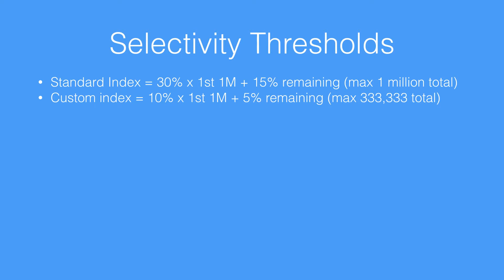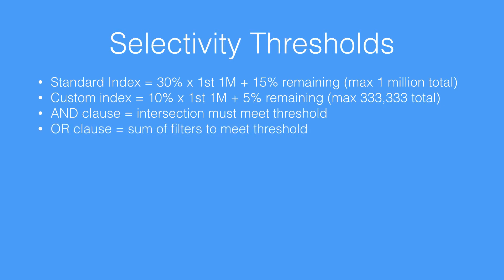If you're using an AND clause within the two filters that you're working with, the intersection you use must also meet the threshold. And if you're using an OR clause, some of the filters must meet the threshold. So if you have two filters and you're working with an OR clause, the two filters together — the amount of records they retrieve — must add up to be less than one of those thresholds. It's normally the custom index threshold, but if you're using two standard indexes, it'll be the standard index threshold.